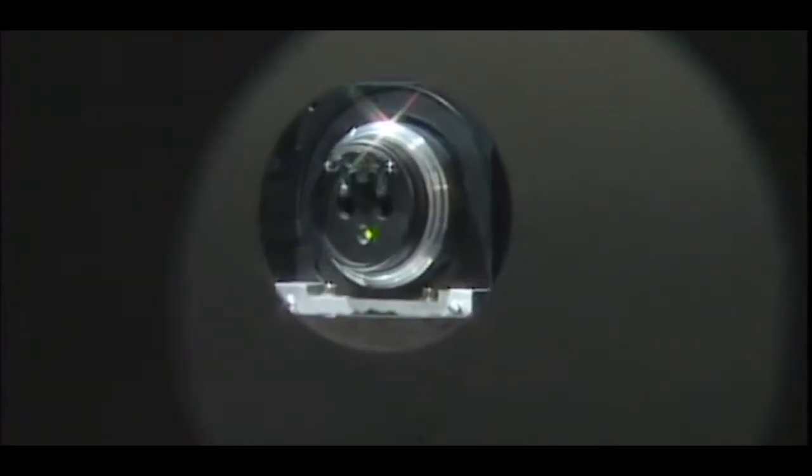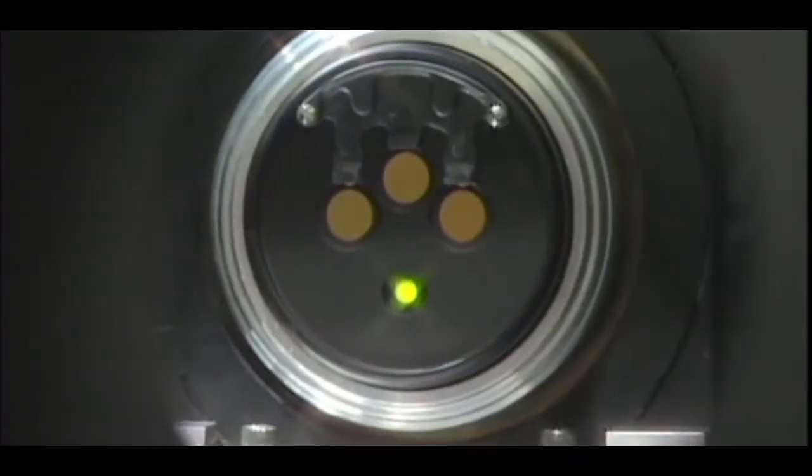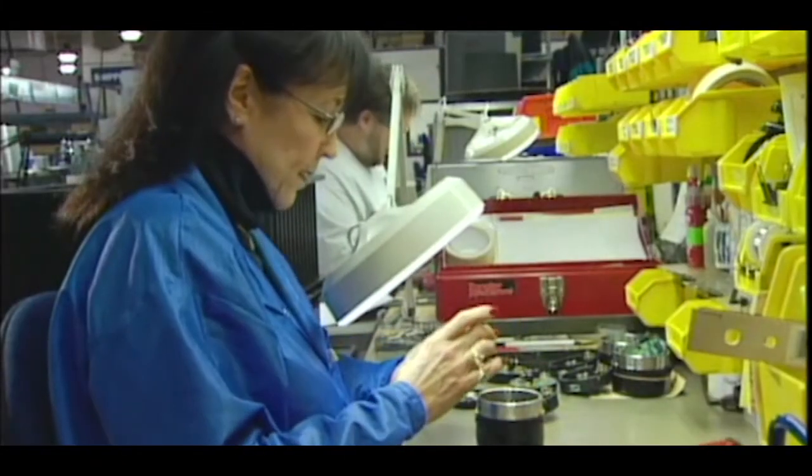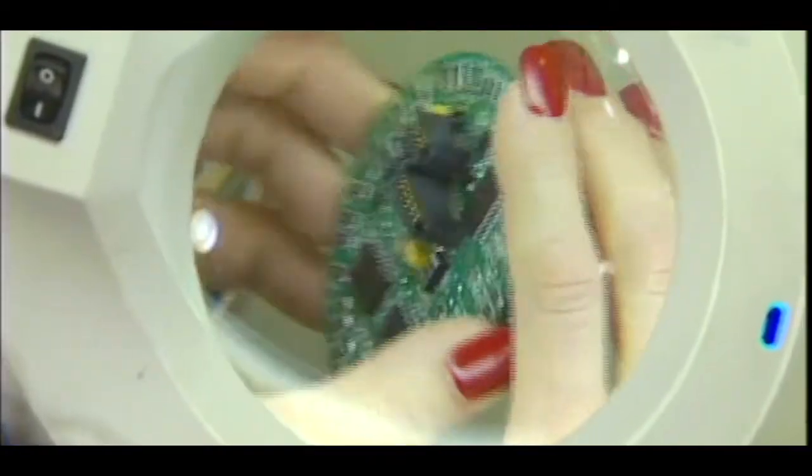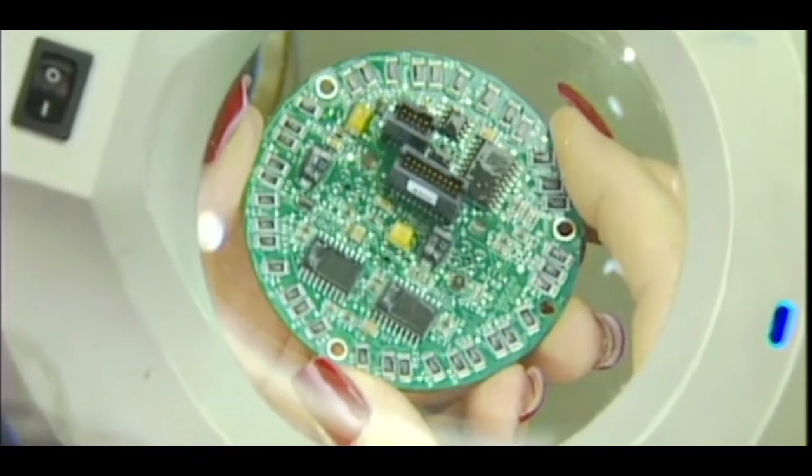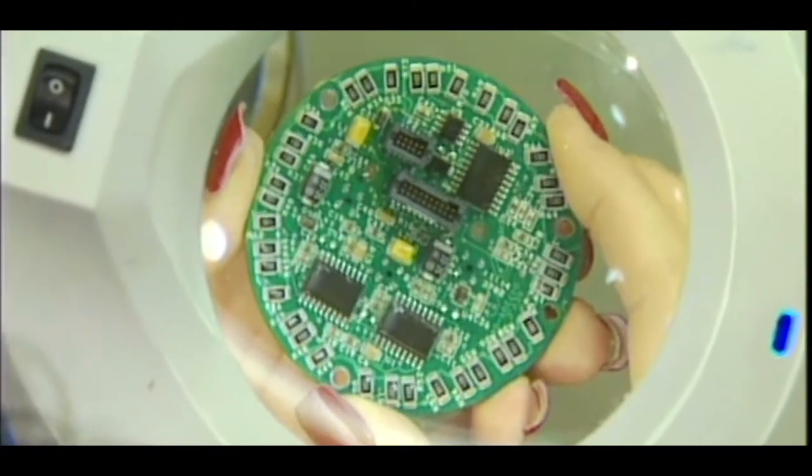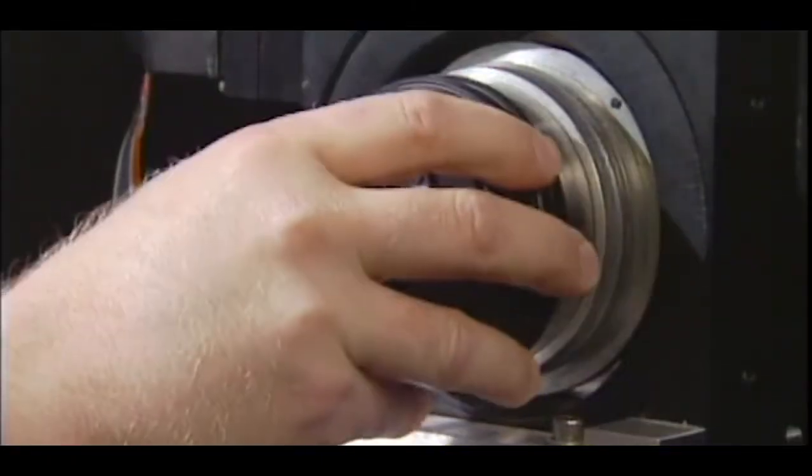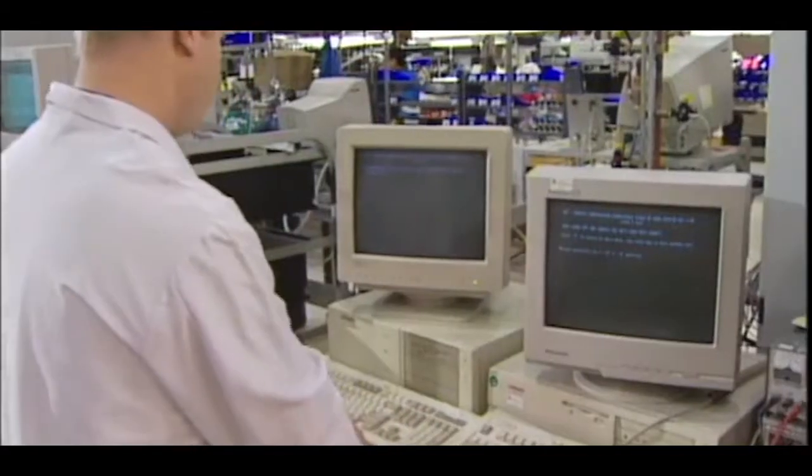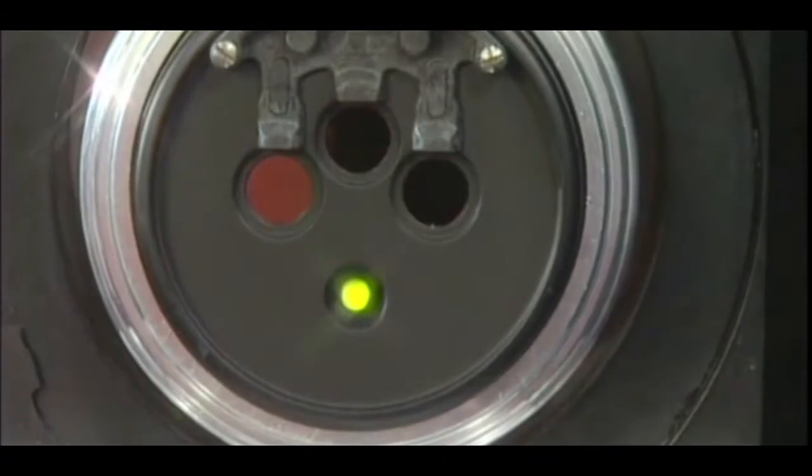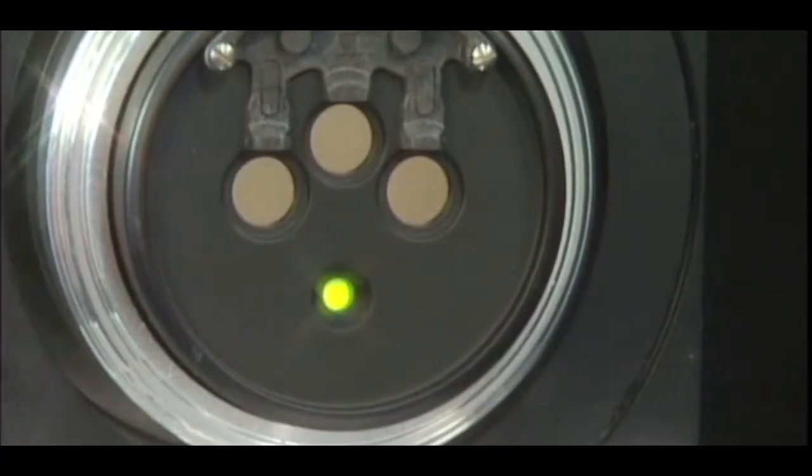Protector utilizes three regions of the infrared spectrum to gather data within its field of view. This data is continually analyzed using patented advanced signal processing algorithms supported by an embedded 32-bit microprocessor. Wavelength, flicker, intensity, and time domain are just a few of the discriminators used to evaluate what the detector sees.